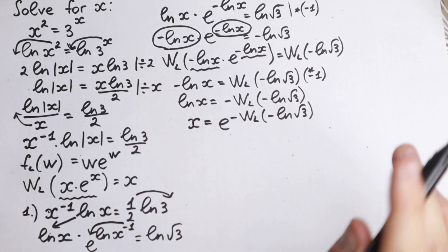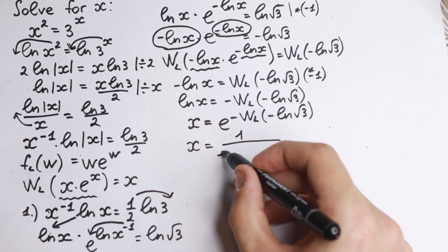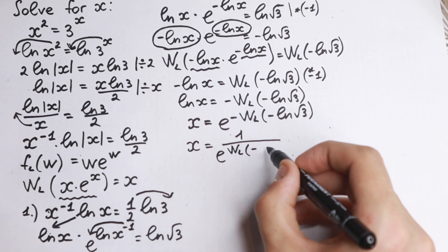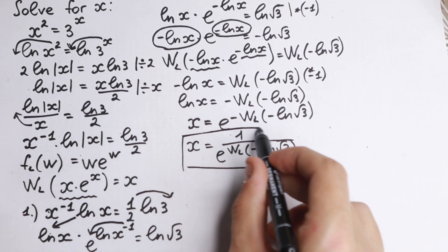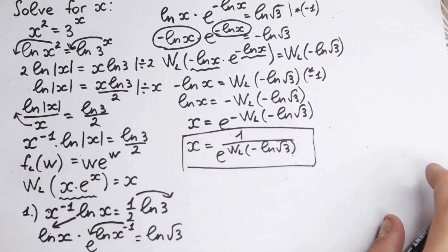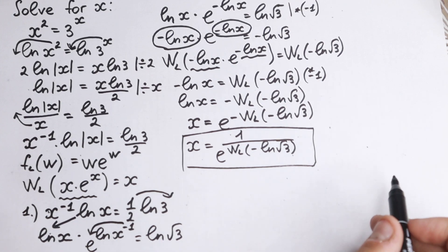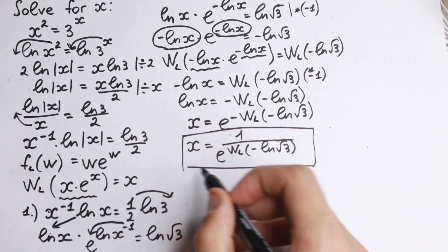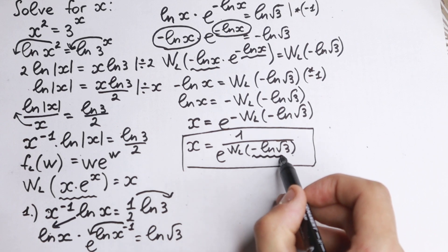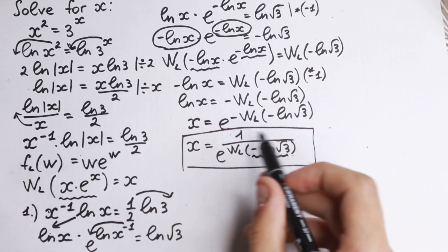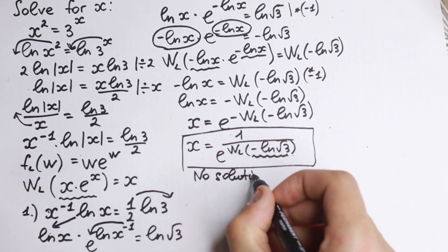This is our expression for x in Case 1. However, checking a table of Lambert W function values, this gives no solution, because the Lambert W function at the point minus natural log 3 does not exist in the real numbers. So for positive x, there is no solution.